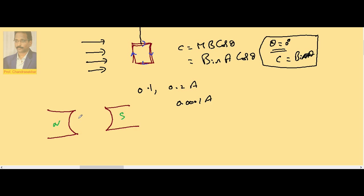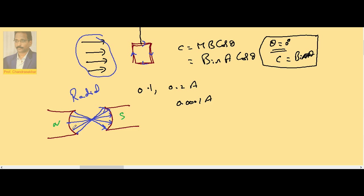The lines of force are always perpendicular to the pole, moving from north pole to south pole. This type of field, where lines curve radially rather than straight, is called a radial magnetic field. The purpose of the radial magnetic field is such that the plane of the coil is always parallel to the field direction, irrespective of the coil's orientation — even after rotation.